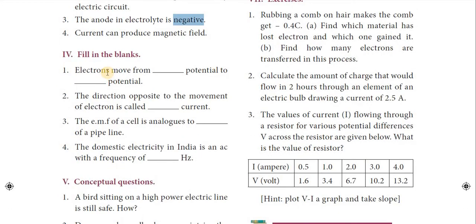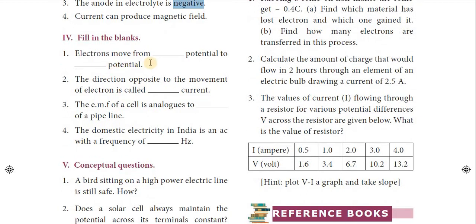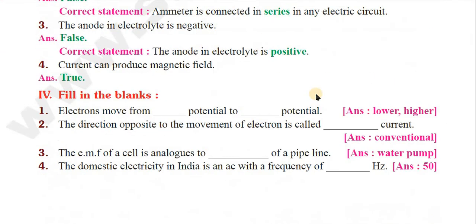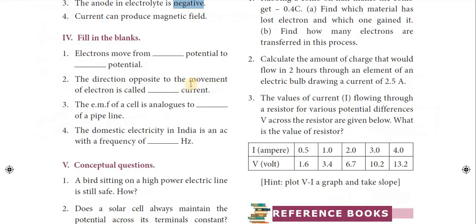Fill in the blanks. First question: electrons move from dash potential to dash potential. Answer: lower potential to higher potential. Electrons move from lower potential to higher potential.